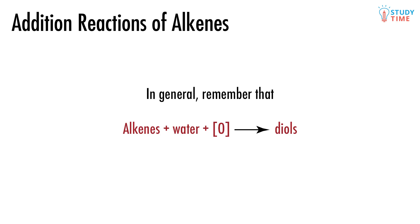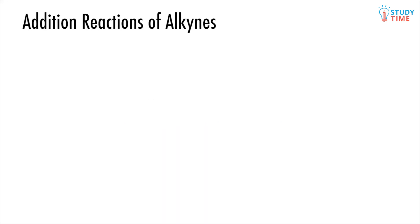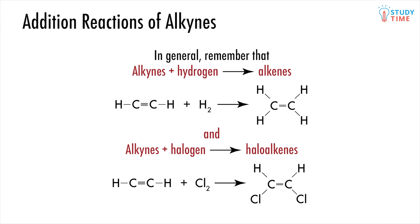Alkenes can also undergo combustion similarly to alkanes, forming no organic products — for alkenes this is usually incomplete combustion. Now for alkynes: these contain a triple bond between carbons and can only undergo addition reactions. One bond of the triple bond is broken and reactants — hydrogen or halogens — are added, forming an alkene. Alkynes + H₂ → alkenes; alkynes + halogens → haloalkenes.